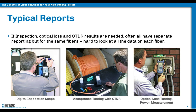For today's technicians, reporting comes in many forms. Typical reports can include visual inspection, which is becoming much more critical because the quality of a connector isn't only about attenuation — it also affects reflectance, which in turn affects the signal quality of the transmission system.